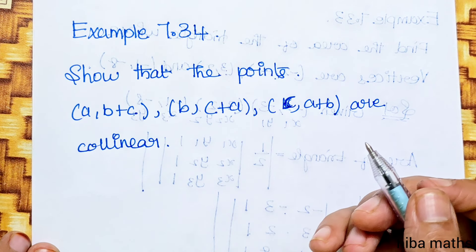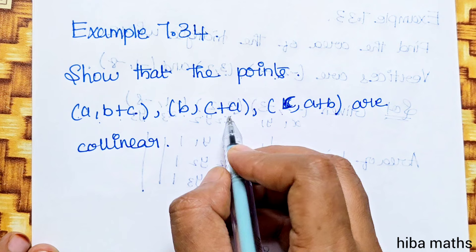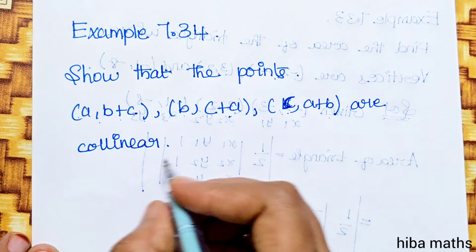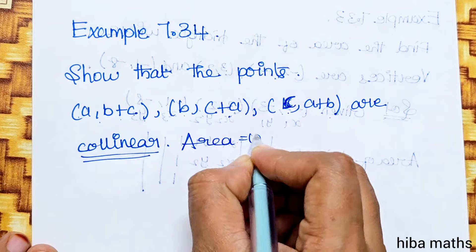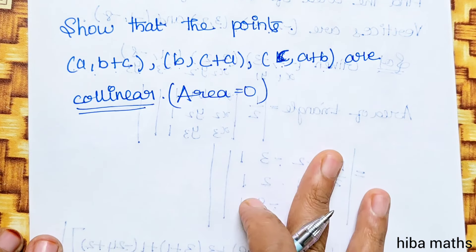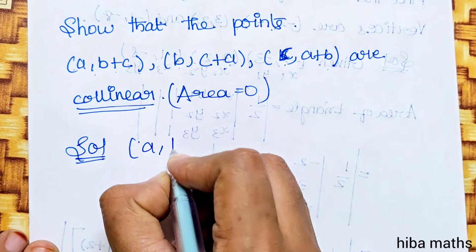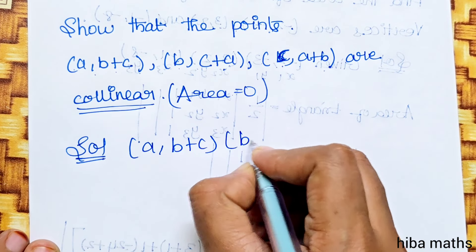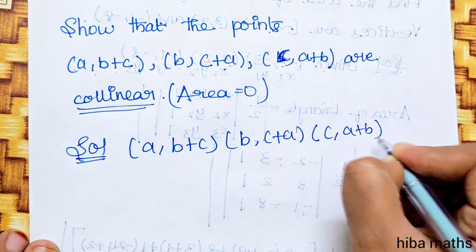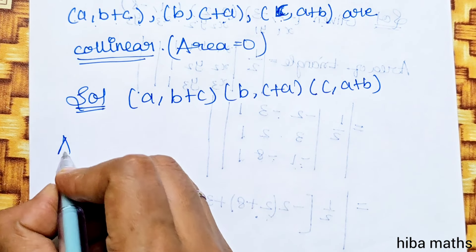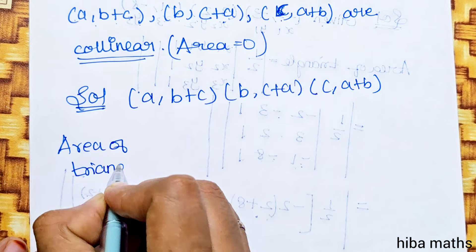Example 7.34: Show that the points (a, b+c), (b, c+a), (c, a+b) are collinear. For collinearity, the area would have value 0.